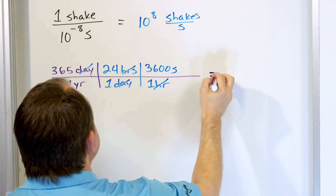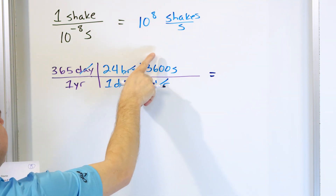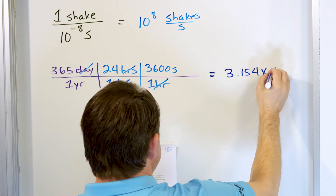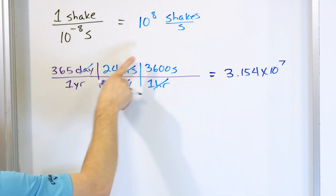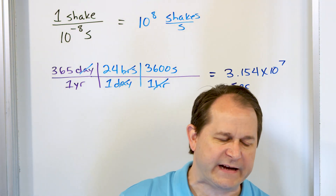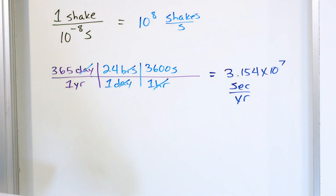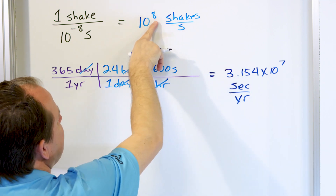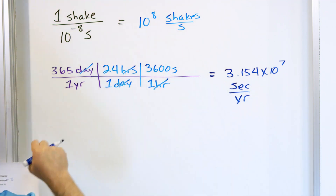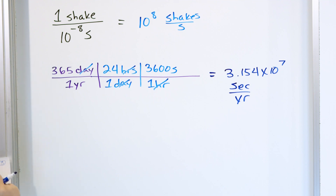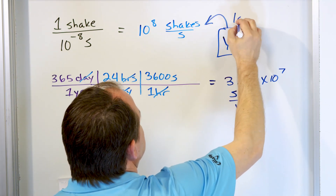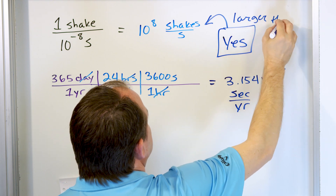When you take 365 and multiply by 24 and then multiply by 3,600, you get 3.154 times 10 to the power of 7 seconds per year. The question asks: are the number of shakes per second greater than the number of seconds in a year? Shakes per second is 10 to the 8, while seconds per year is 3.154 times 10 to the 7. So shakes per second is the larger number, and the answer is yes.